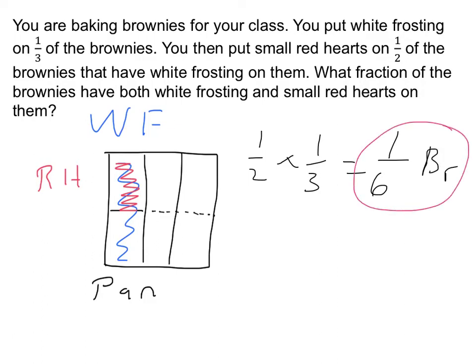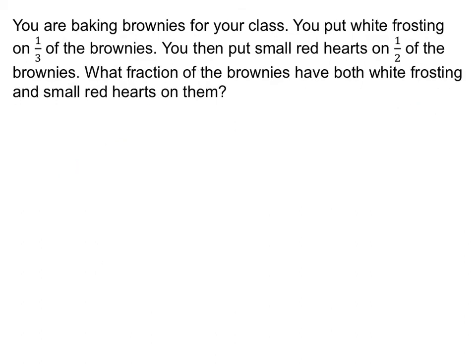One-sixth of the brownies have small red hearts and white frosting on them. Our picture justified that this is indeed solved by multiplying fractions. This next example at first glance is going to look identical to the previous example, but there's a slight difference, and that slight difference is very important.